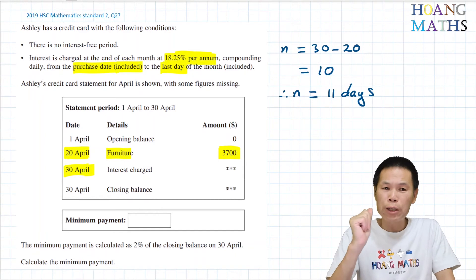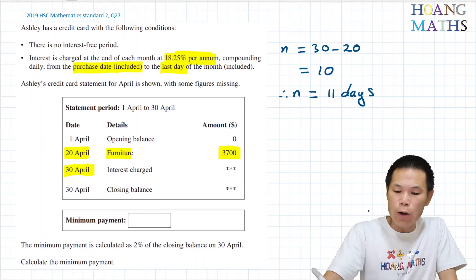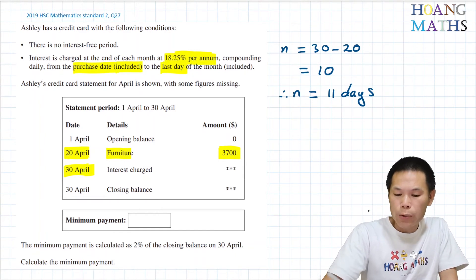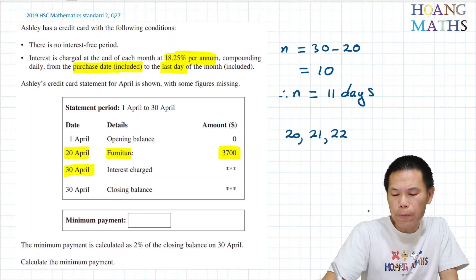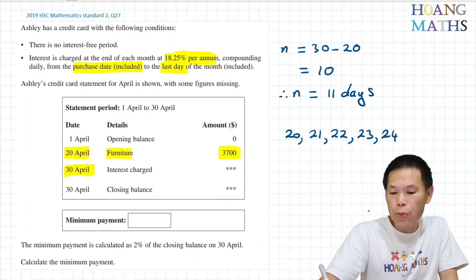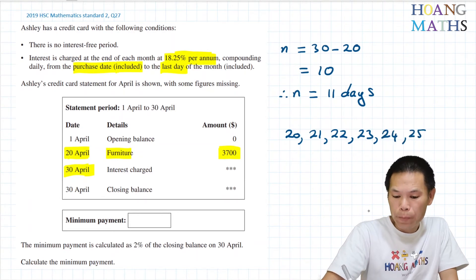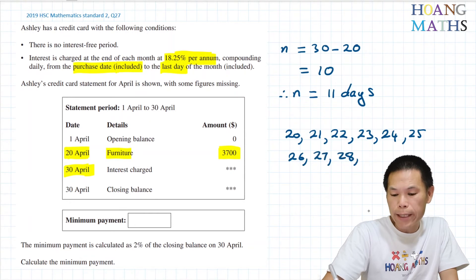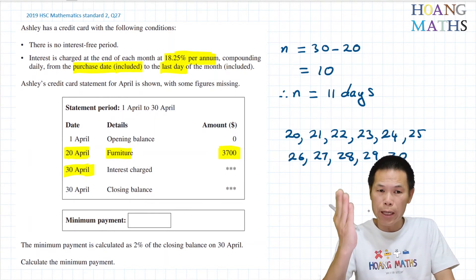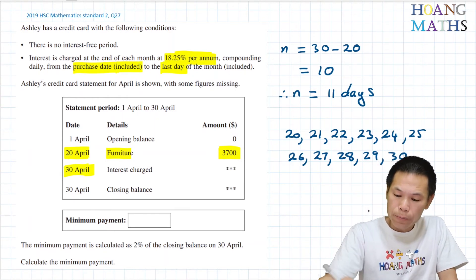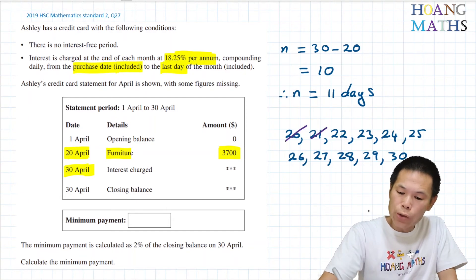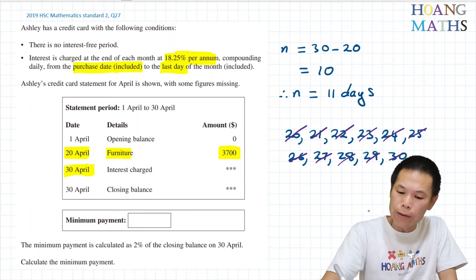If you're not 100% sure, you can just write it down quickly. The dates are: 20th, 21st, 22nd, 23rd, 24th, 25th, 26th, 27th, 28th, 29th, and 30th — because it's including both the 20th and the 30th. Counting them: 1, 2, 3, 4, 5, 6, 7, 8, 9, 10, 11. So 11 days.